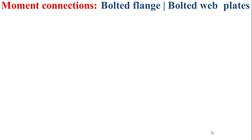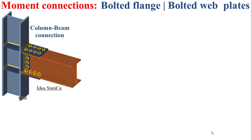Now I'll introduce the first type of moment connection, which can be called bolted flange, bolted web plates. As you can see in this figure, we have a beam depicted in brown as the child member and a column depicted in light blue as the parent member. The beam is connected to the column by its flanges and its web using flange and web plates. These flange and web plates are bolted to the flanges and the web of the beam and welded to the flange of the column.